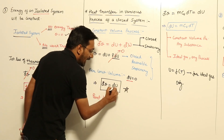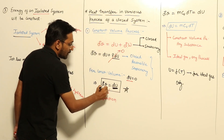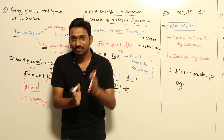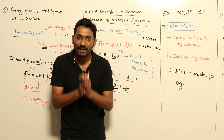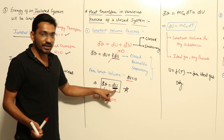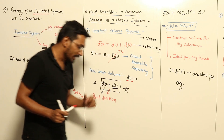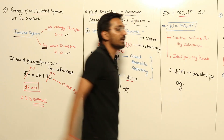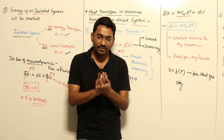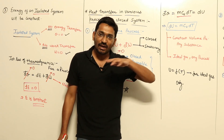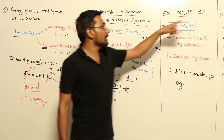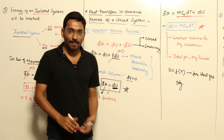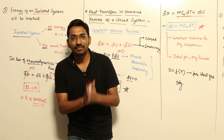This change of internal energy is a point function. So in a constant volume process for a closed system, heat transfer will be a point function, not a path function. It depends upon the point because internal energy is a point function. We already studied that heat transfer for a closed system in a constant volume process is equal to mCvDT, where m is the mass, Cv is the specific heat at constant volume, and DT is the change of temperature. So DQ equals mCvDT equals DU, meaning DU equals mCvDT.